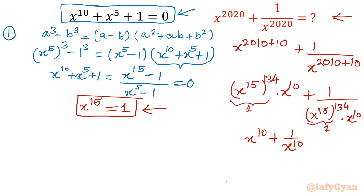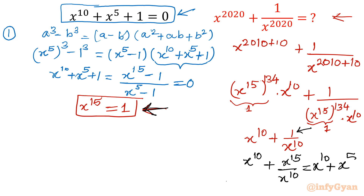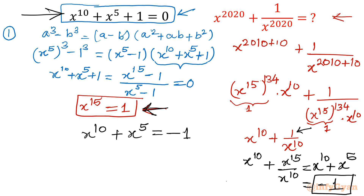Now because x power 15 is 1, I can write in the numerator x power 10 as it is, and in place of 1 I write x power 15 divided by x power 10. So the expression becomes x power 10 plus x power 5, since x power 15 divided by x power 10 is x power 5. From our original equation, x power 10 plus x power 5 equals negative 1. So our answer is negative 1. This is approach number 1.